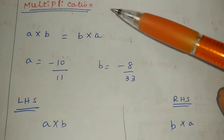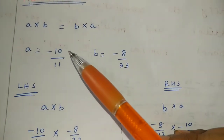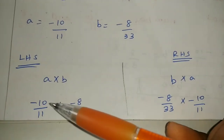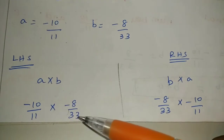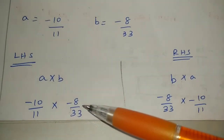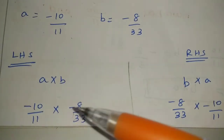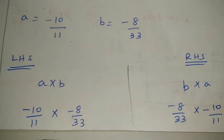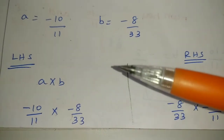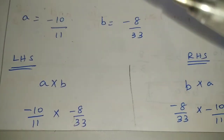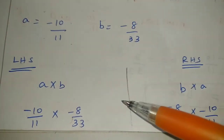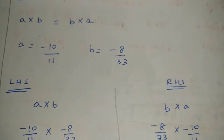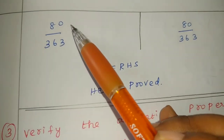Next, for multiplication under commutative property: A into B is equal to B into A. A is minus 10 by 11, B is minus 8 by 33. For LHS: minus 10 by 11 into minus 8 by 33. Multiplying: minus into minus gives plus. 10 into 8 is 80, 11 into 33 is 363. So LHS equals 80 by 363.